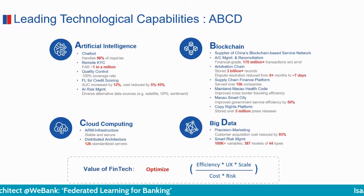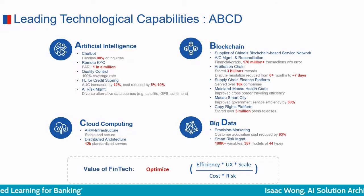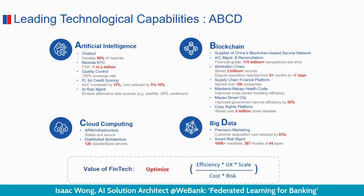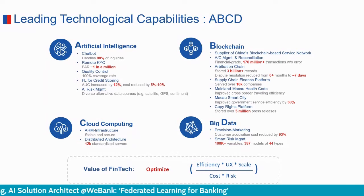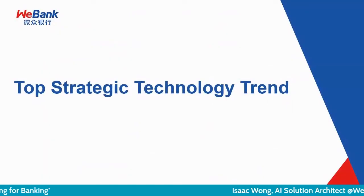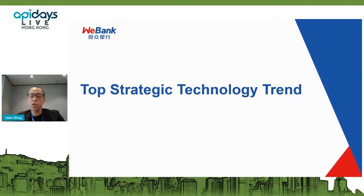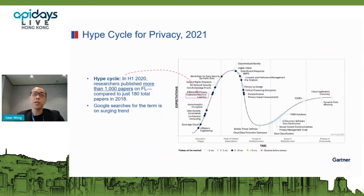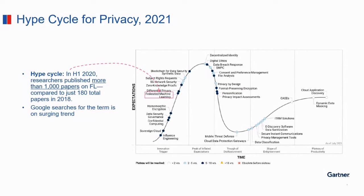This umbrella of technologies has been successfully deployed and verified within the bank, and is being rolled out into international markets and other partners and enterprises. Today we will be particularly focused on federated learning, a cutting-edge technology we are seeing in the market. From the market, we are observing a prominent trend — this is a hype cycle from Gartner describing privacy technology of 2021, and you can see that federated machine learning is categorized as one of the innovation trigger technologies.